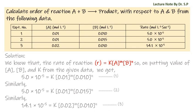Putting values of A, B, and k from the given data, for experimental data 1 we get: 5.0 × 10⁻⁵ = k × (0.01)^m × (0.010)^n — call this equation 1. Similarly, from experimental data 2 we get: 5.0 × 10⁻⁵ = k × (0.01)^m × (0.015)^n — call this equation 2.